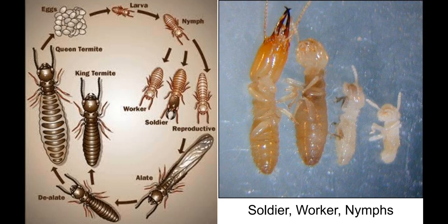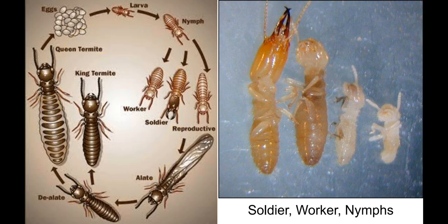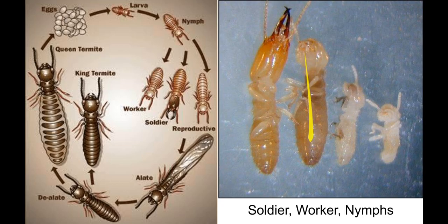Eventually, when weather allows, they also produce alates — winged insects, both female and male — that can fly away and establish a new colony, repeating the cycle. Here we see photos of the nymph, worker, and upper nymph: the nymph grows and eventually becomes an adult worker and adult soldier.